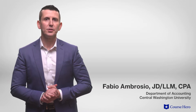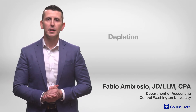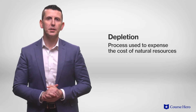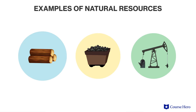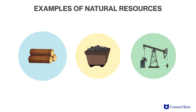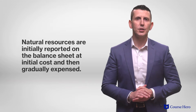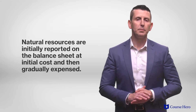While the process used to gradually expense the cost of fixed assets is called depreciation, the process used to expense the cost of natural resources is called depletion. Natural resources are assets that are formed naturally over time and the supply of which is not indefinite. Some examples of natural resources include timber, minerals, and oil. Like other long-term assets, natural resources are initially reported on the balance sheet at initial cost and then gradually expensed through the depletion process.